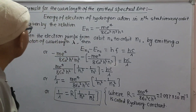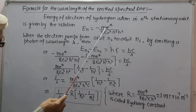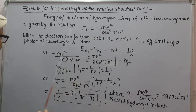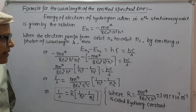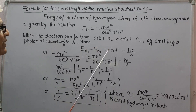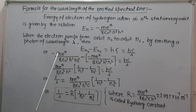First, let us take the formula for wavelength of emitted spectral line. The energy of an electron of hydrogen atom in the nth stationary orbit is given by En = −me⁴ / (8ε₀²n²h²). Therefore, when the electron jumps from orbit n2 to orbit n1 by emitting a photon of wavelength lambda and frequency f, then En2 − En1 = hf = hc/λ.